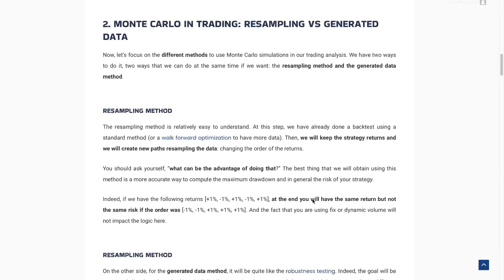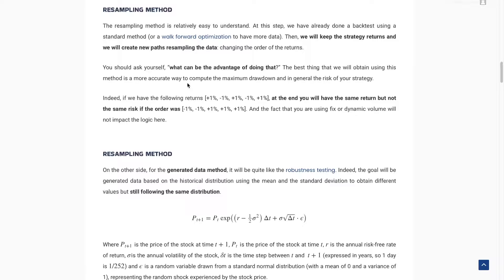For example, if you have returns of +1, -1, +1, -1, +1, one possible reordering could be -1, -1, +1, +1, +1, +1. As you can see, the drawdown will not be the same each time. In one ordering you have a drawdown of 2%, and in another a drawdown lower than 1%. So the order matters — it's very, very important. The resampling method is the easiest way to do a Monte Carlo simulation.